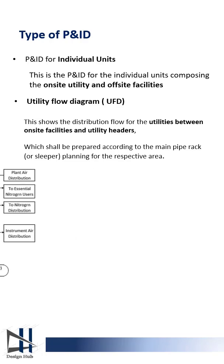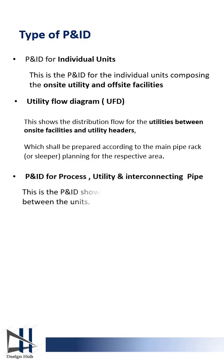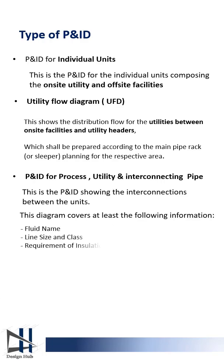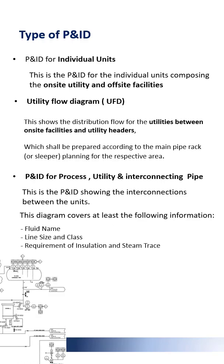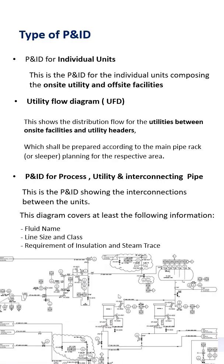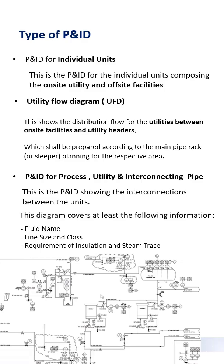The third kind of P&ID is the main P&ID, which connects all the units and utility interconnections. This kind of P&ID includes information such as fluid name, line size, flange class, and requirements for insulation or tracing.